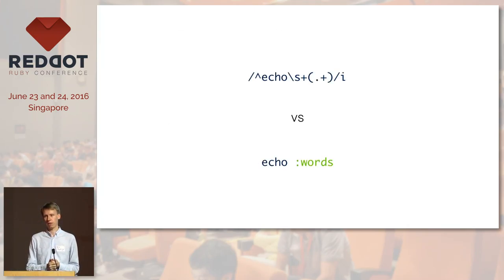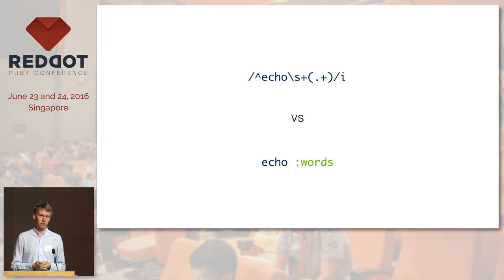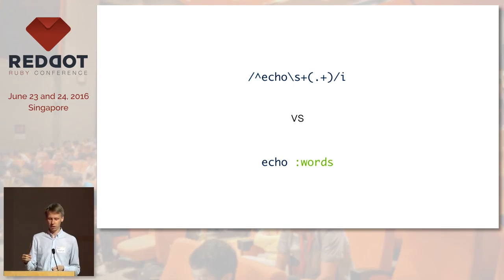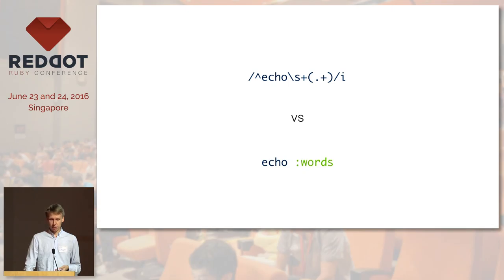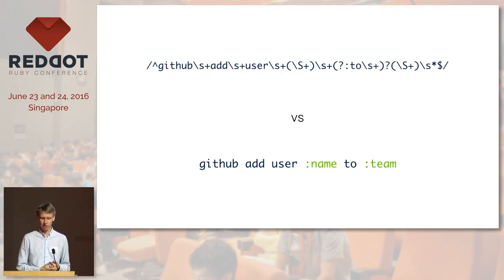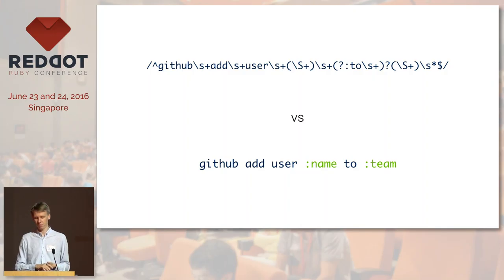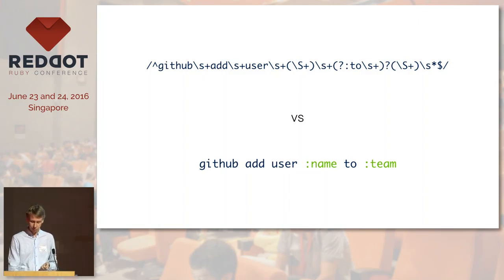We thought maybe we could do something without regular expressions. The first option is to write the command syntax with a regular expression; the second is to write it with some kind of pattern language. With 'echo' the difference isn't that big, but with a bigger command like 'GitHub add username to team name', the regular expression becomes quite long and it's easy to make a mistake.